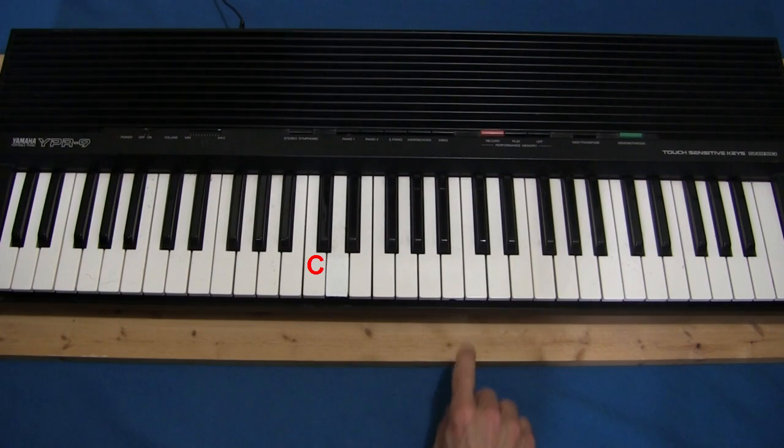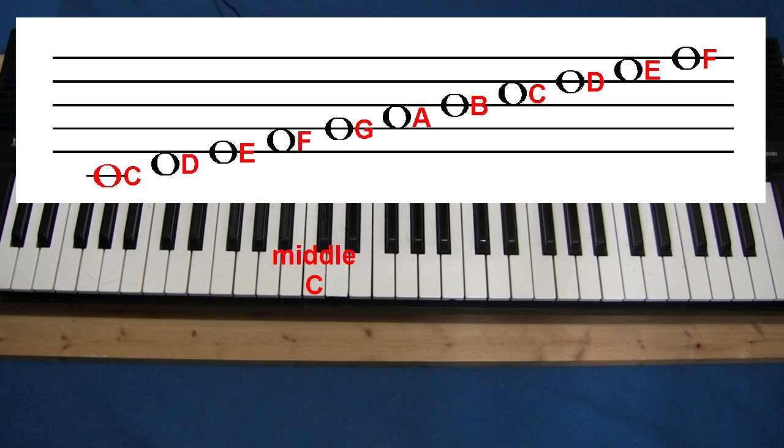But if this is C, and this is also C, then which one do you use? Well, on a piano the C that's in the middle of the keyboard is called middle C, and is this one down here.